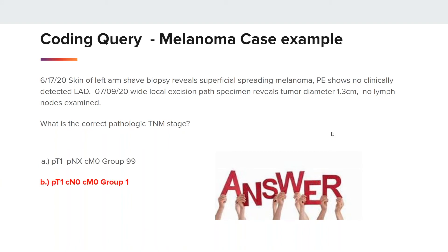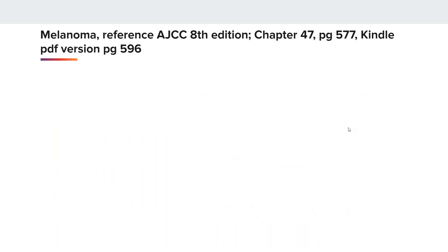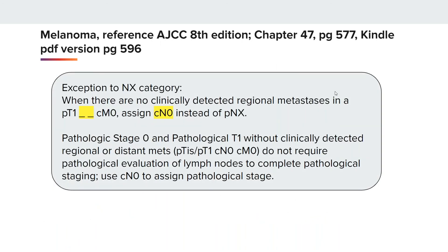The correct answer is B: PT1, CN0, CM0, group 1. On page 57 in the AJCC 8th edition, chapter 47 for melanoma, there is an exception to the N category. When there are no clinically detected regional metastases in a PT1, CM0, assign CN0 instead of PNX. Pathologic stage 0 and pathological T1 without clinically detected regional or distant metastases — PTIS, PT1, CN0, CM0 — do not require pathological evaluation of lymph nodes to complete pathological staging. Use CN0 to assign the pathological stage.